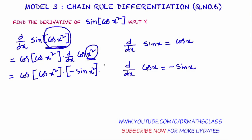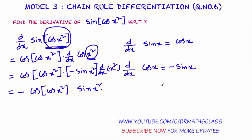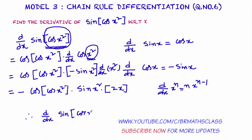You imagined x squared as x, so you need to differentiate it. I'll write the minus first. So we have minus cos of cos x squared, into sine of x squared, into derivative of x squared. We know d by dx of x to the power n is n into x to the power n minus 1, so derivative of x squared is 2x.